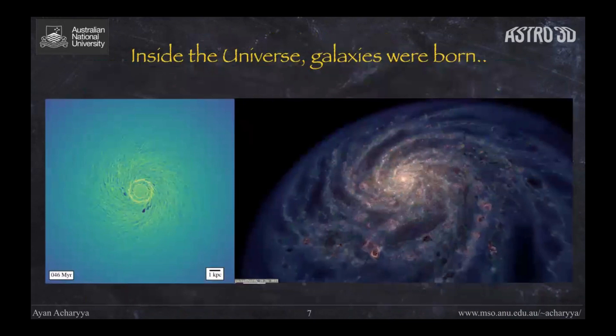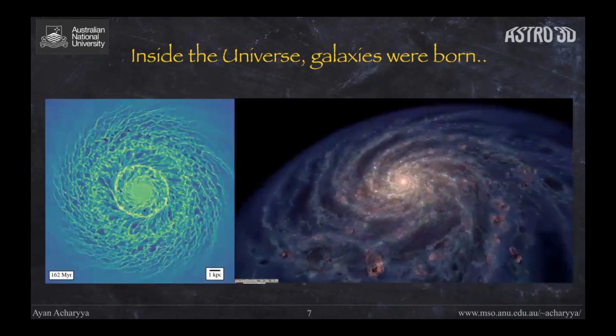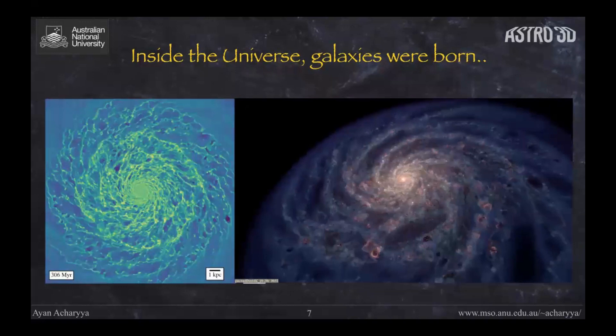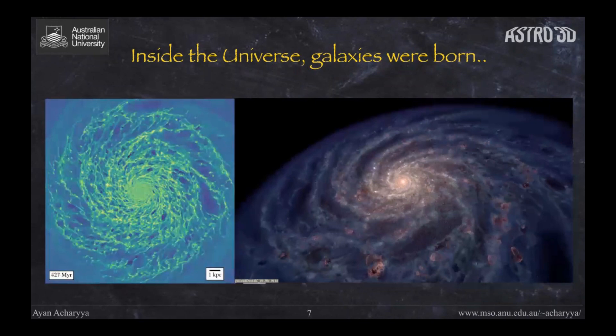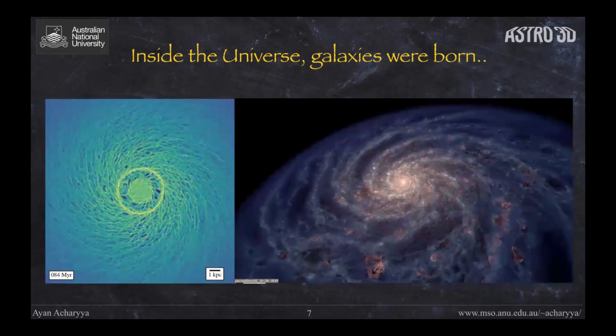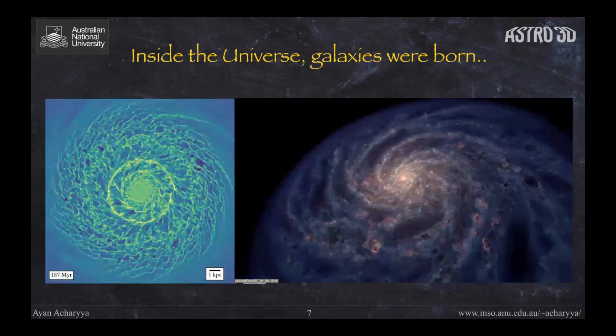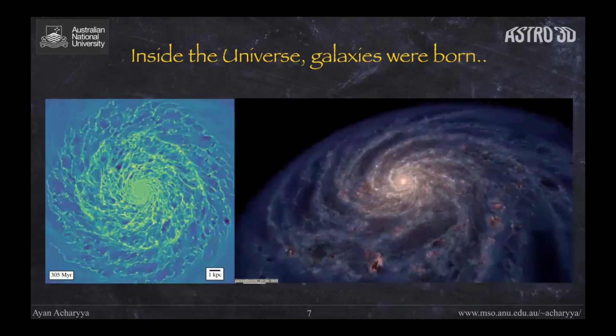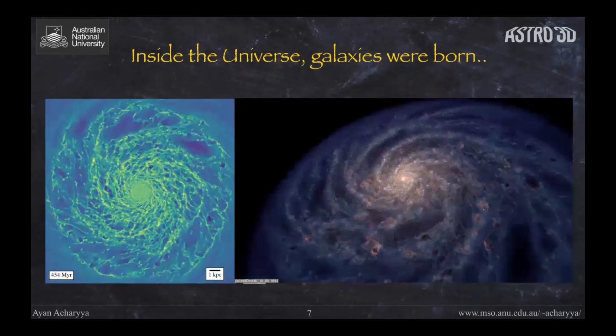These two simulations show individual single galaxies. Each dot is actually a star, and stars are the center of our story because the production of these building blocks of life takes place inside stars. On the right-hand side video you can see red bubbles growing and exploding — that is where new stars are being born and then exploding as supernovae. Let's zoom in further to look at individual stars.